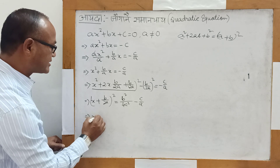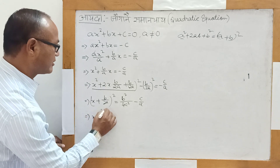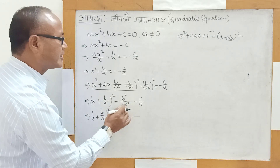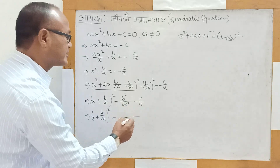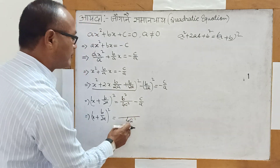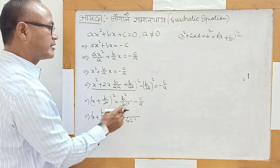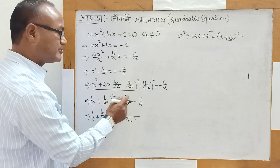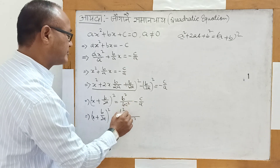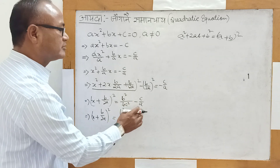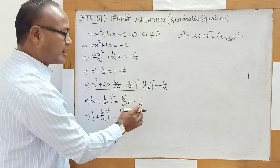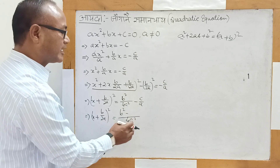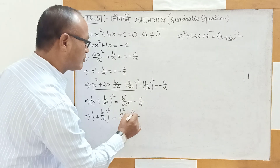Now, we have x plus b by twice a, whole square. Now we have two squares. We have four a squared.